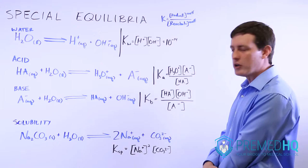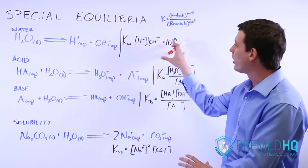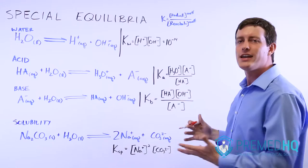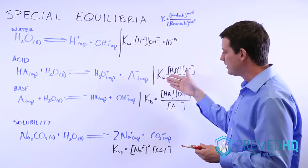With K values, the general rule is that KW is just a fixed number you'll know. For the others, a high K value generally means that the species is very effective — it's a good acid, a good base, or something very good at dissolving.